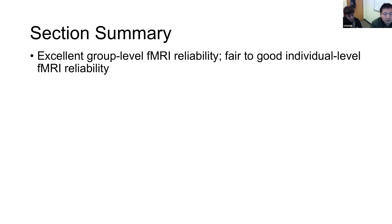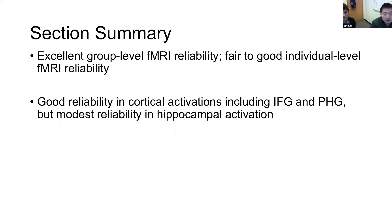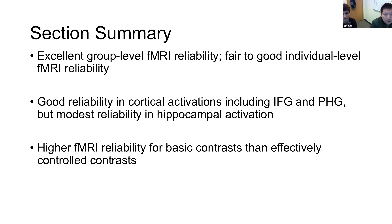In summary, we looked at fMRI reliability. We find excellent group-level reliability, but individual-level reliability is only fair to good. Higher reliability is found in cortical regions, with more modest reliability in subcortical regions including the hippocampus. Also, choosing a contrast that involves more subtraction further reduces reliability. Now I'll hand it to Roya for the reliability of structural measures.